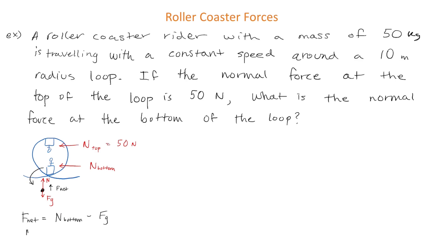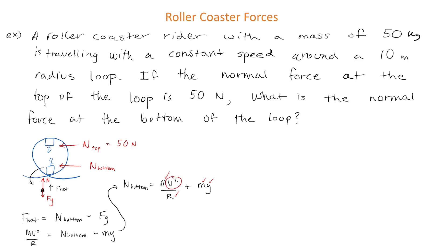Since F_net is the centripetal force we replace it with mv²/r, and replace F_g with mg. We rearrange to isolate for the normal force. We know the mass, radius, and g, but the only thing we're missing is the rider's speed. Since they travel at constant speed, let's use what we know from the top of the loop to solve for it.